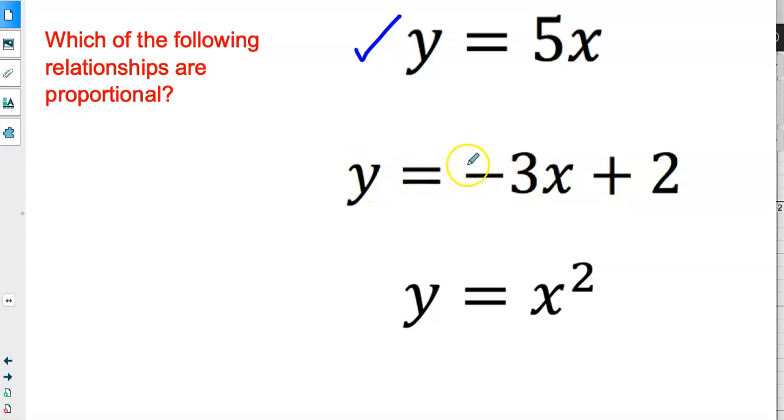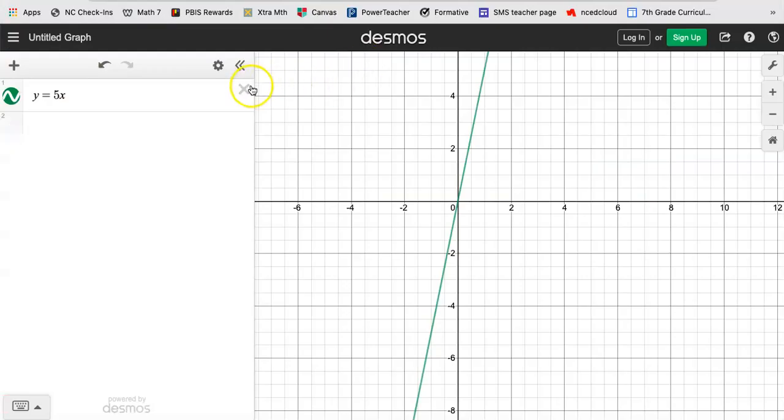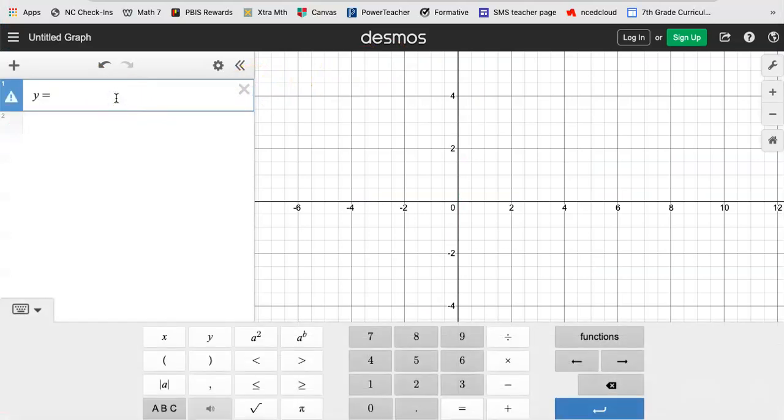Second example, y = -3x + 2. Well, let's graph it. y = -3x. I'm going to stop there for a second. If it was just y = -3x, look, it would be proportional because it would be a straight line that goes through (0, 0).